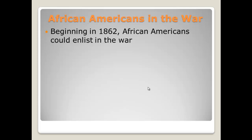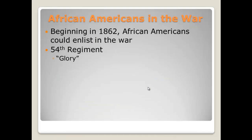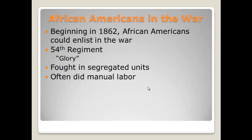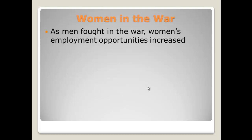Beginning in 1862, African Americans could enlist in the war. A very famous regiment was the 54th Regiment from Massachusetts — African Americans who fought in the Civil War, the basis for the movie Glory. They fought in segregated units, not alongside white soldiers, though they were often commanded by white leaders. They frequently did manual labor like building and digging trenches. Unfortunately, during most of the war, African American soldiers were paid less than their white counterparts of equal rank.